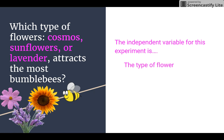So the independent variable in this experiment is the type of flower, be it cosmos, sunflower, or lavender. So it's the type of flower. That is what we are changing. That is the independent variable.